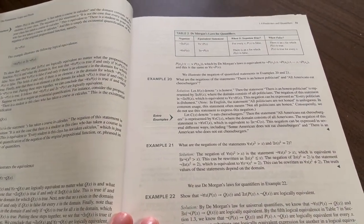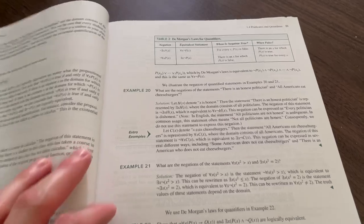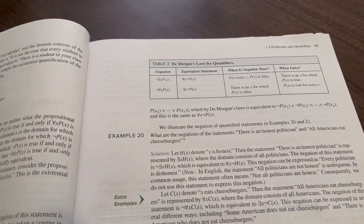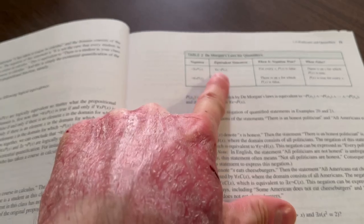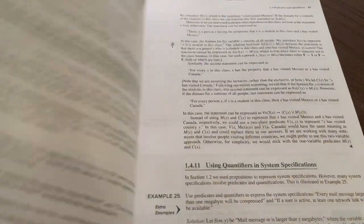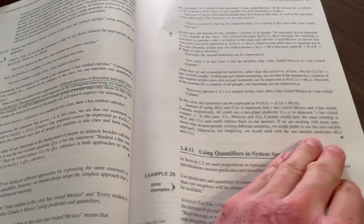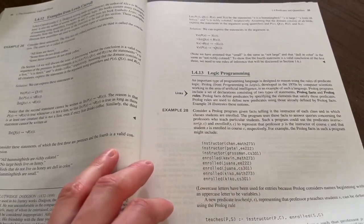We can think of De Morgan's laws for quantifiers. That's one way we can at least think about this in terms of this statement and this statement being equivalent. We have logic programming.